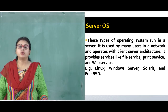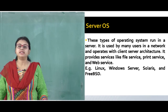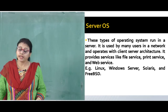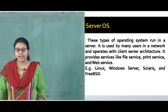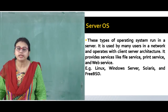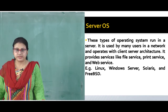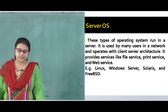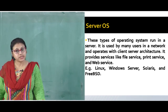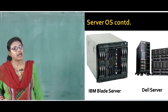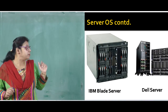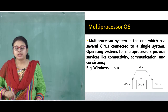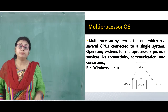The second type is the server operating system. These operating systems run in servers and are used mainly by users in a network, operating with a client-server architecture. They provide services like file services, print services, and web services. Examples include Linux, Windows Server, Solaris, and FreeBSD. I have shown pictures of a blade server introduced by IBM and a Dell server.